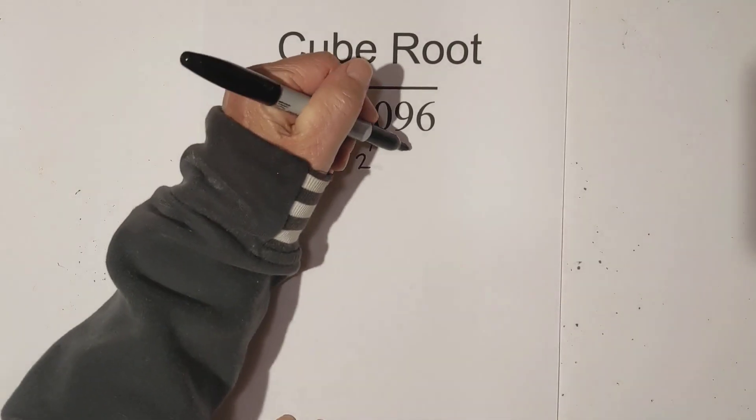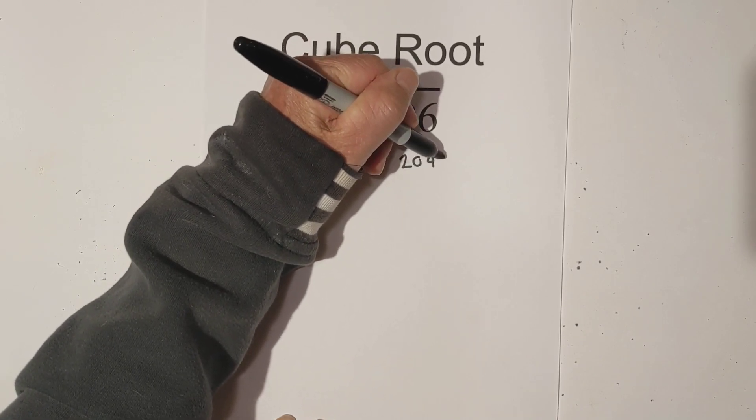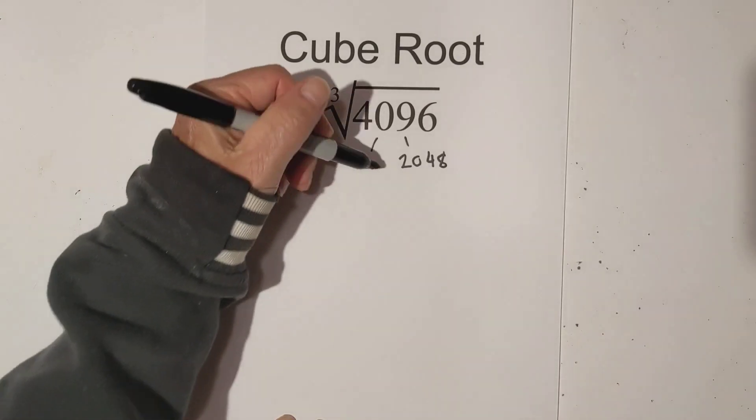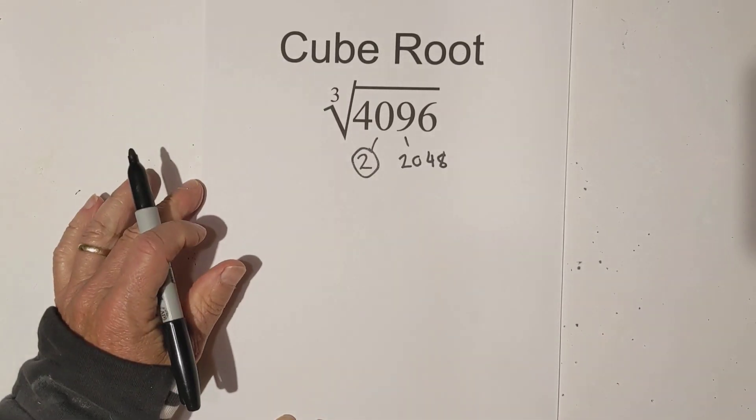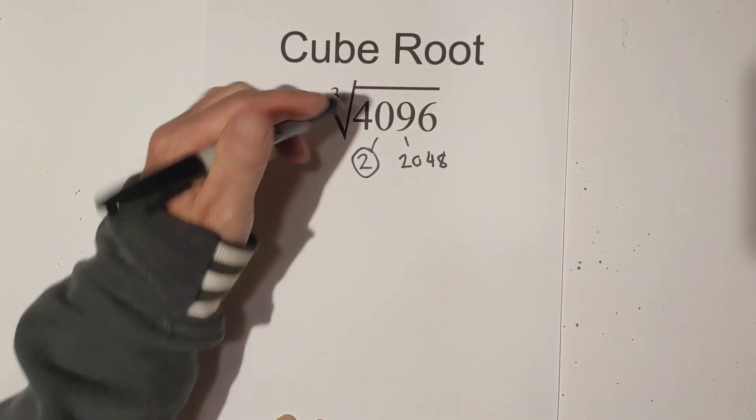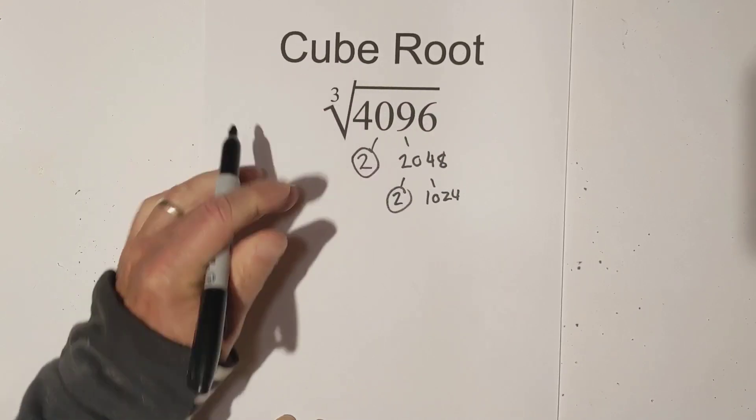This factor tree is a doozy. It's got lots of numbers so let's start. Because it ends in an even number, the 6, I know it's divisible by 2 and I like to use 2 because it's easy. Now 2 times 2048 equals 4096. So now let's go 2 times 1024.